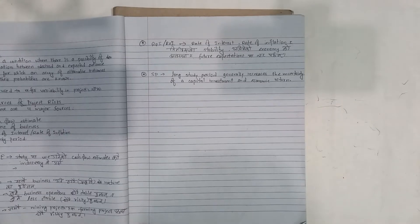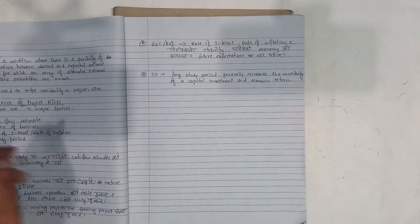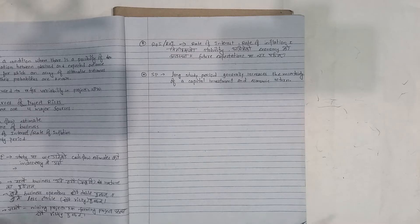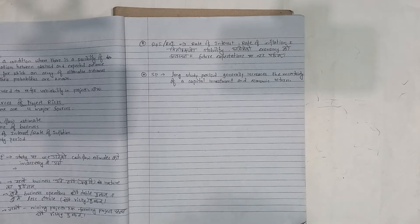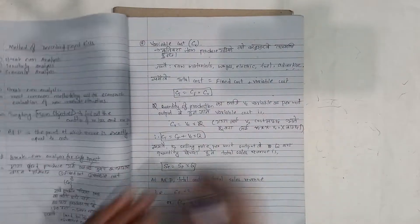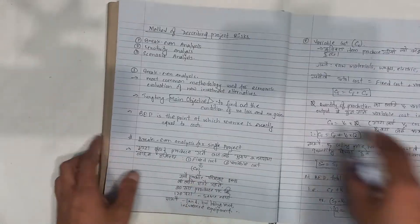What is the rate of interest and rate of inflation? That is the stability of the economy and future expectations — this is where risk is generated. A longer study period means more risk and more uncertainty. Capital investment and expected economic return also carry uncertainty.